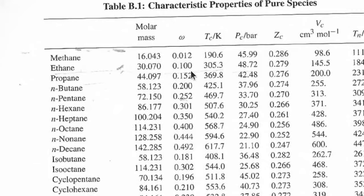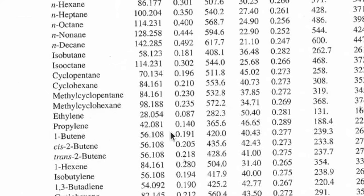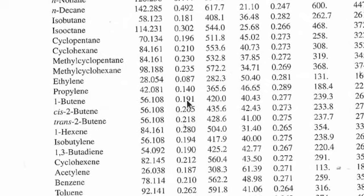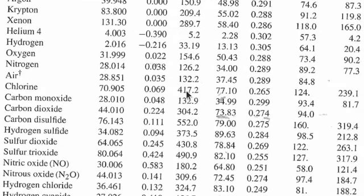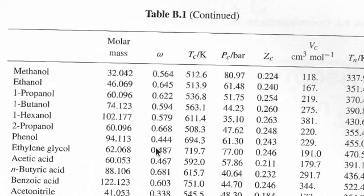Another example: ethane has an acentric factor of 0.1. From the table you can see other gases in this range — propane has approximately the same acentric factor, and propylene also has approximately the same acentric factor. Carbon disulfide is 0.11 and hydrogen chloride gas has the same acentric factor. These gases will behave the same way — they will deviate from their ideal state at high pressure the same way and their compressibility factor will be the same.